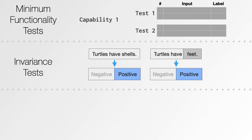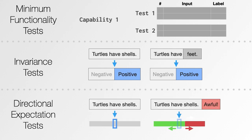To recap: the first kind of test is the minimum functionality test — small datasets that test specific capabilities, similar to unit tests. Then we have invariance tests, where we perturb inputs in ways that should not affect the output and measure whether they do. The Checklist open-source library includes templates to generate these kinds of perturbations. Finally, directional expectation tests verify that if we make a perturbation expected to shift the output one way, the model goes in the expected direction — adding a negative word shouldn't make the prediction more positive.